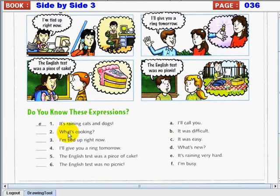Number 2. What's cooking? What's cooking? What is the answer? Alright, letter D. What's new? Very good.